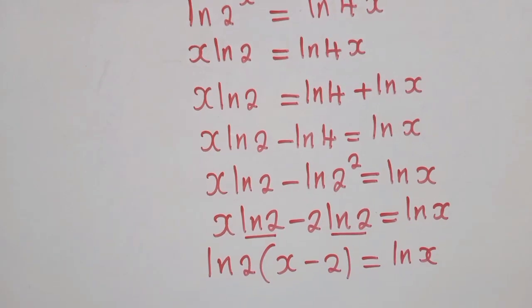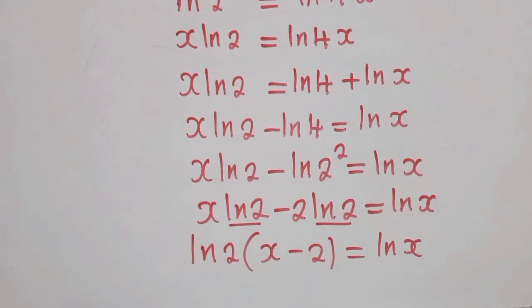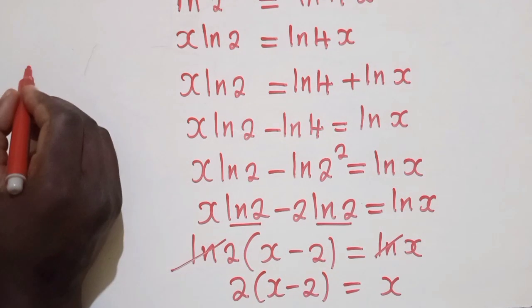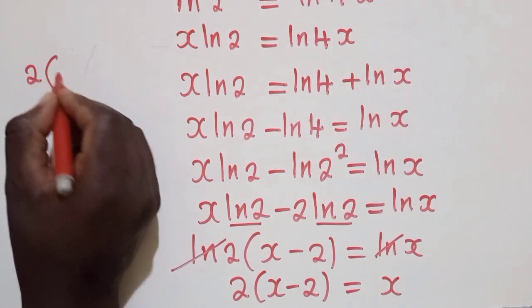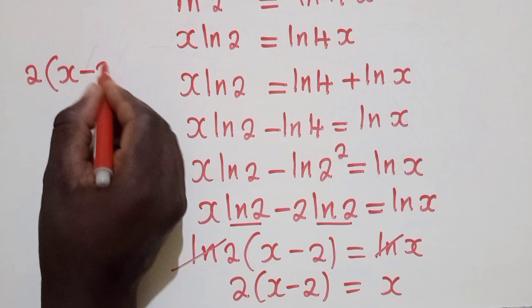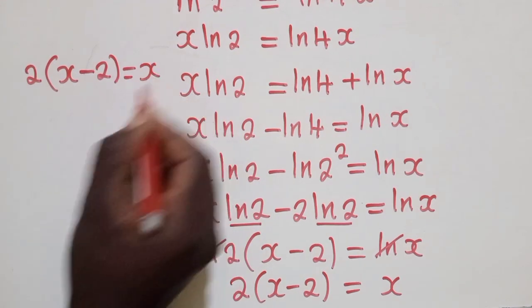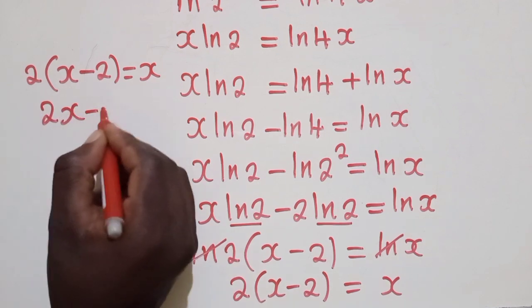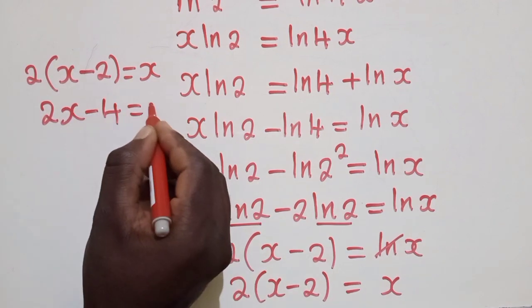All right. So here we can now say this ln and ln will be cancelled. We shall remain with 2, open bracket, x minus 2 is equal to x. So we now solve this equation. So let me write it here: 2 open bracket x minus 2 is equal to x. So solving this equation, we shall have 2x minus 4 is equal to x.